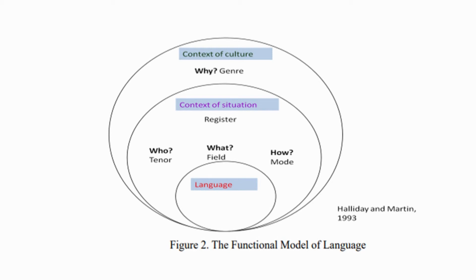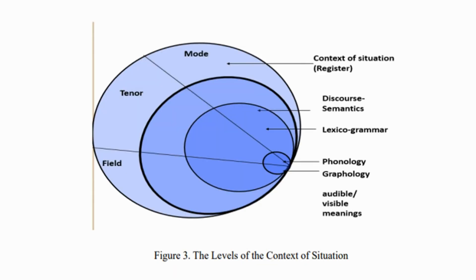Inside the language itself, SFL describes a model with three levels. The first is discourse semantics, which has three metafunctions: interpersonal, ideational, and textual. The second is lexical grammar, which includes both grammar and vocabulary to represent the view of language in both lexis and grammar. The third is phonology, orthography, or graphology, which refers to the sound system, the writing system, and the wording system.